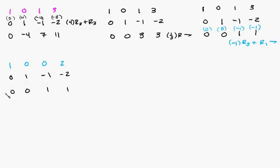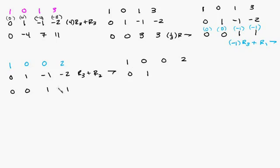What we want to do now is get a 0 here. We can add this row plus this row. So we're going to add row 3 plus row 2. That'll give us this over here. Copy everything else down: 1, 0, 0, 2. And then 0 plus 0 is 0. 0 plus 1 is 1. 1 plus negative 1 is 0. 1 plus negative 2 is negative 1. Then copy everything else down: 0, 0, 1, 1.